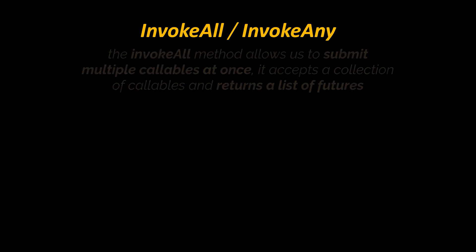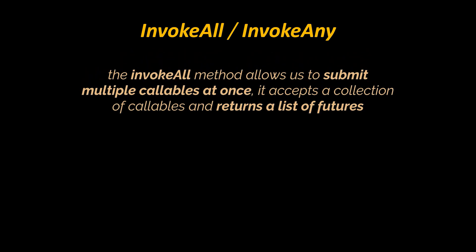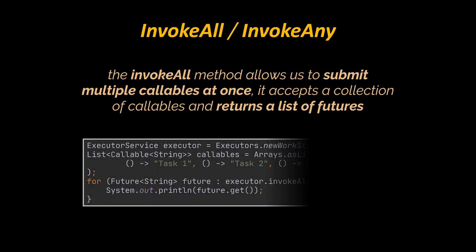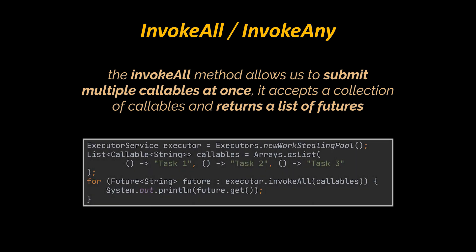Now let's look at some additional methods offered by the ExecutorService: invokeAll and invokeAny. The invokeAll method allows us to submit multiple Callables at once — it accepts a collection of Callables and returns a list of Futures. In this example we loop over all the Futures and print their results to the console. To create the executor here we used the newWorkStealingPool method introduced in Java 8.